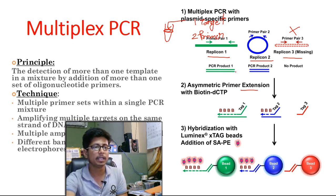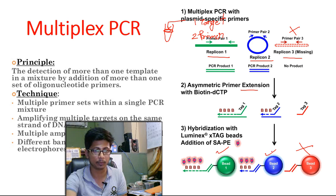As we have replicon one and two present in this case, the bead attached to replicon one gives green color, the bead attached to replicon two gives blue color, and three should give red. But in this case, as we don't have any target DNA for replicon three, we won't get red coloration. We will get green and blue, which we can detect with a detector.